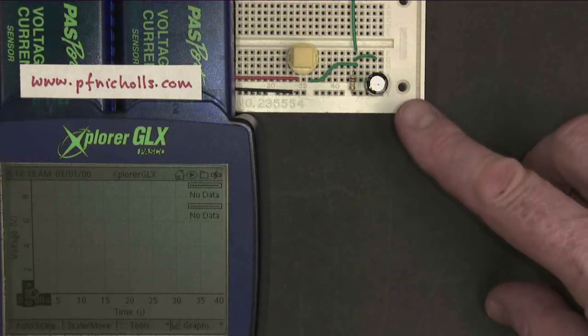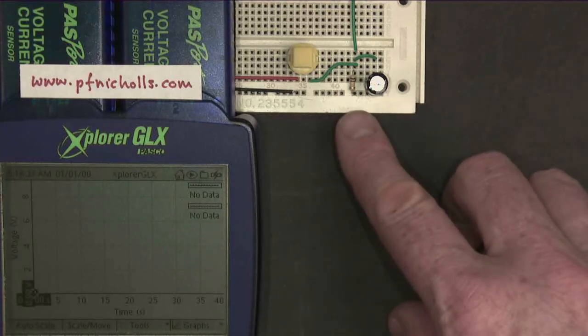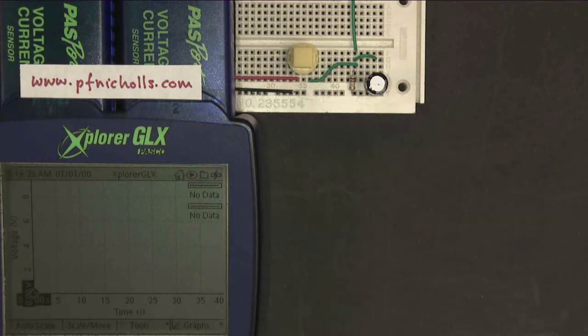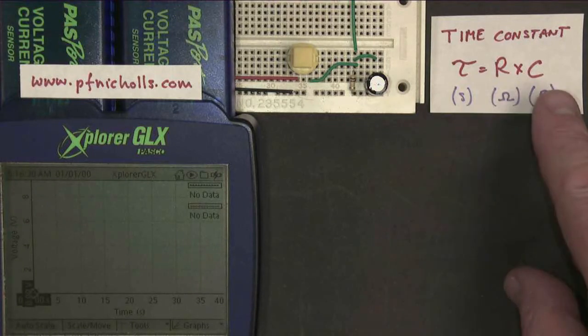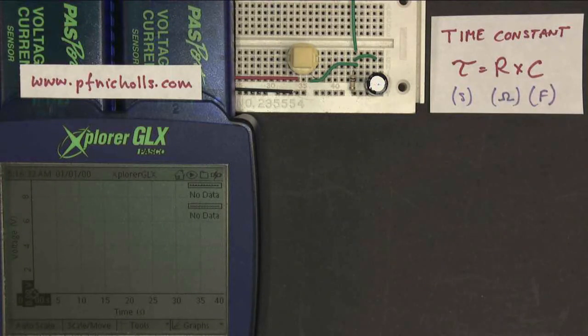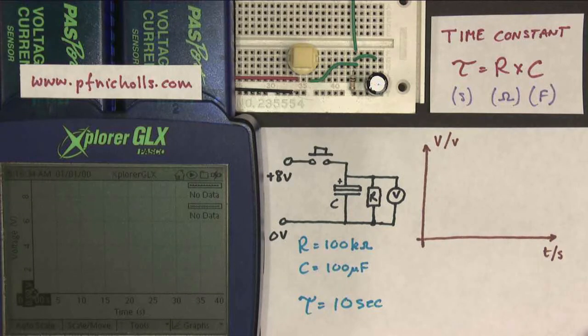In this video I'm investigating this component, a capacitor, in parallel with this component, a resistor, and seeing what happens when you allow them to discharge. My theory is that the time constant is a product of R and C multiplied together, and I've built this circuit to investigate them.